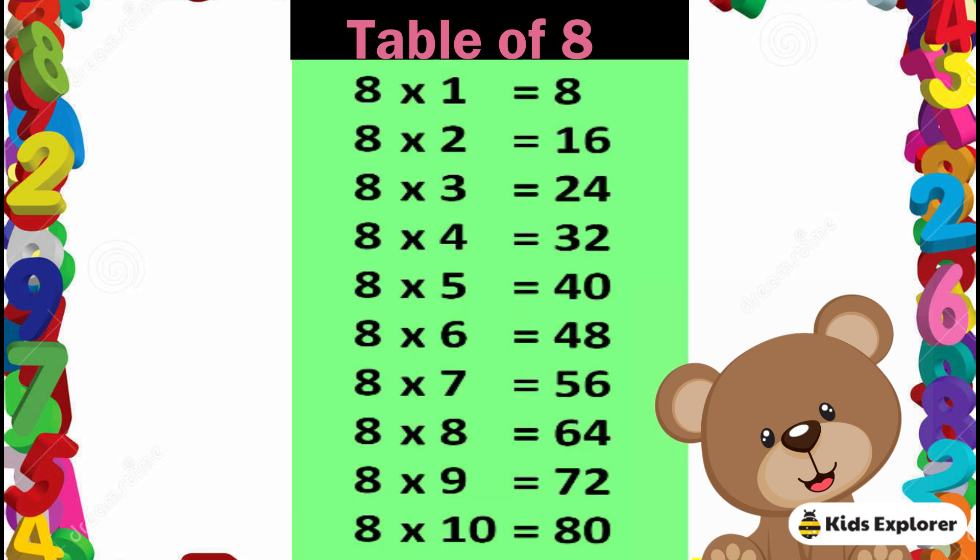Table of 8. 8 1's are 8, 8 2's are 16, 8 3's are 24, 8 4's are 32, 8 5's are 40, 8 6's are 48, 8 7's are 56, 8 8's are 64, 8 9's are 72, 8 10's are 80.